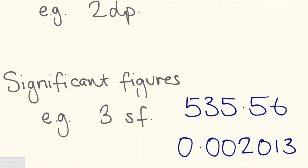So in this number, 535.56, the first significant figure is the five. The second significant figure is the three. And the third significant figure is the third number from the left, which is five.